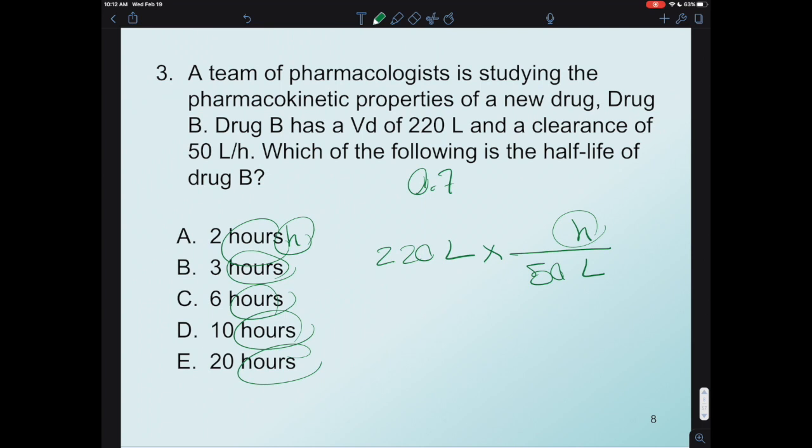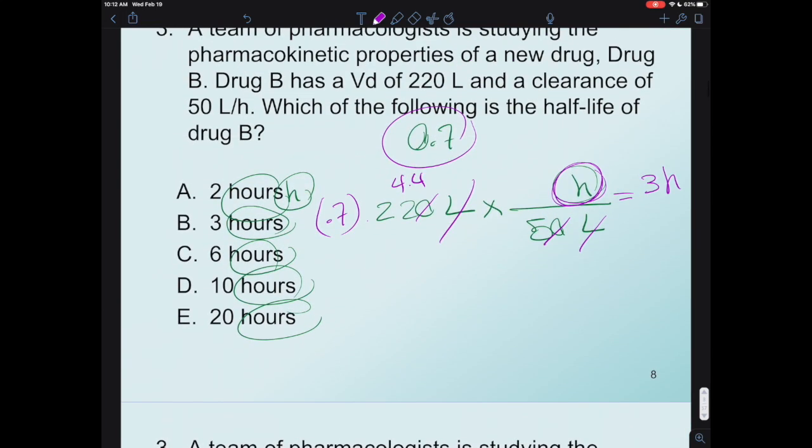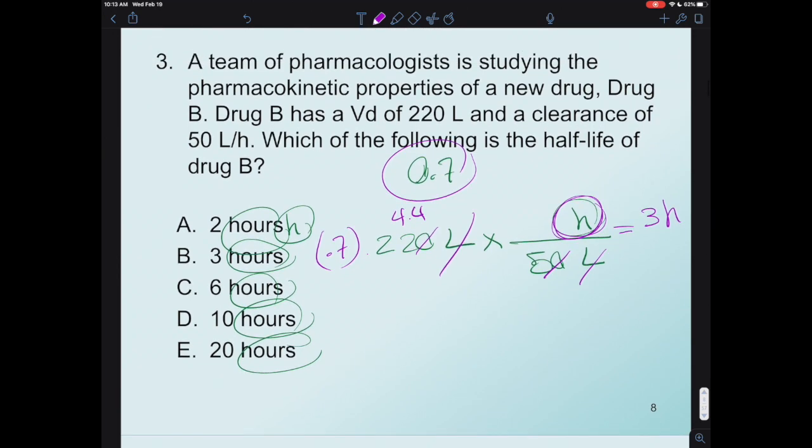Why did I do that? Because I want to cancel the liter part. But remember, for half-life you have 0.7 or 0.69 in it, so don't forget that. So these would cancel. 22 divided by 5, I think it's 4.4, and 4.4 times 0.7 should be almost 3. Just pay attention - the unit you're left with is hour. So it'd be yeah, almost there.